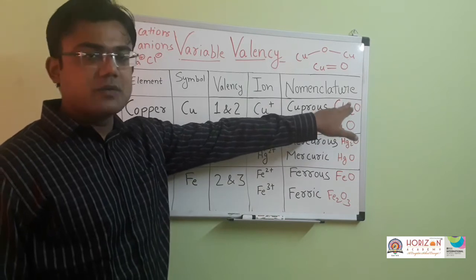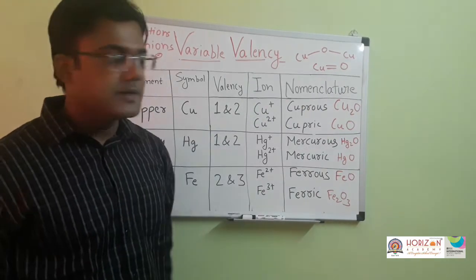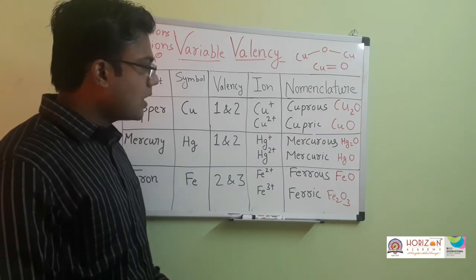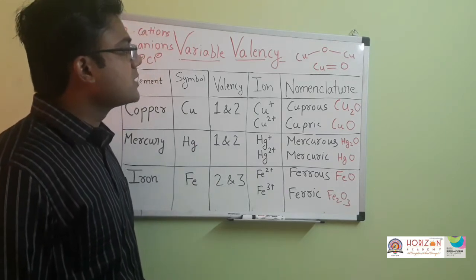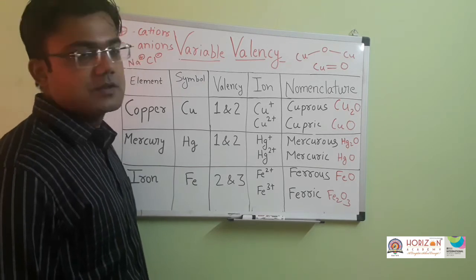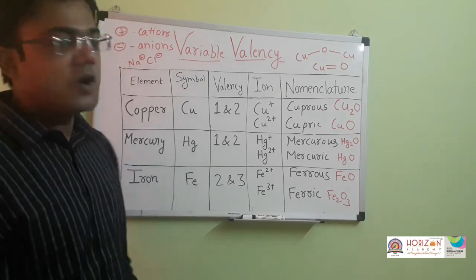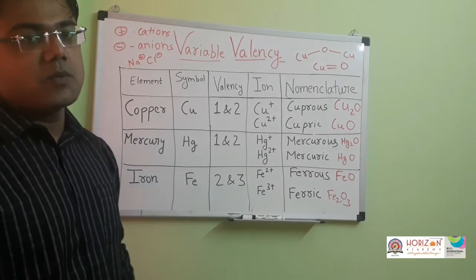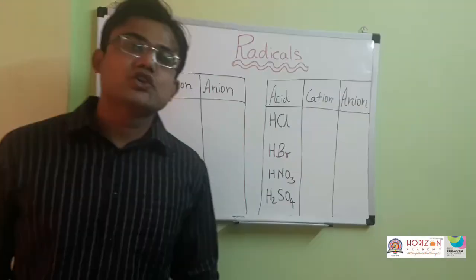It is not that elements always form only one type of compound — they can also combine with other elements. Variable valency is nothing but the capacity of an element or atom to form different numbers of bonds with another element.